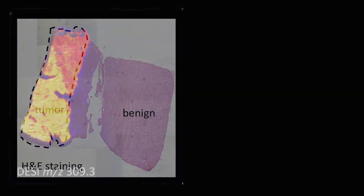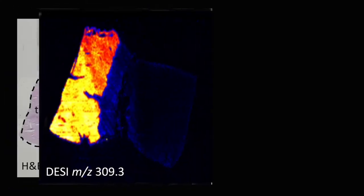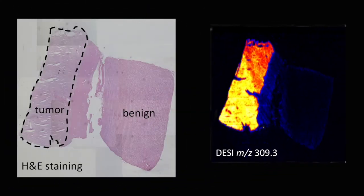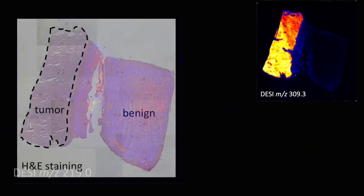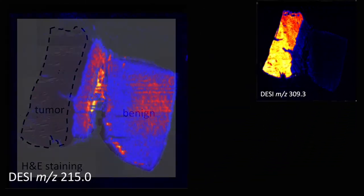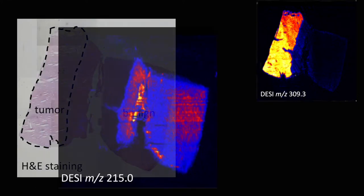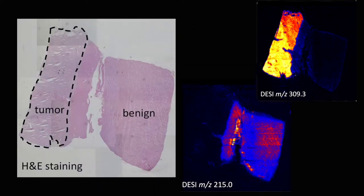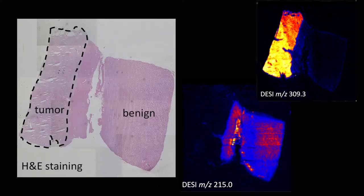The way DESI works is that it is non-destructive, so we can actually take that tissue and analyze it by gold standard pathological detection methods at the same time, allowing us to evaluate the accuracy of the DESI technique in comparison to other techniques.